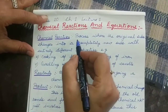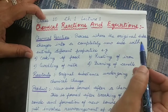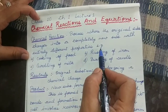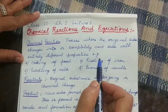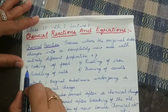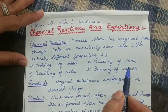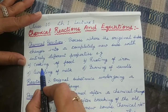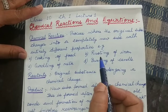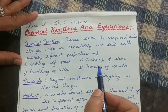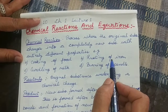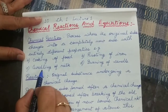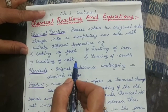What is a chemical reaction? A chemical reaction is a process where the original substance changes into a completely new substance with entirely different properties. Some examples of chemical reactions that you have already studied are cooking of food, rusting of iron, curdling of milk, and burning of candle. For example, when rusting of iron takes place, the grey metal iron gets converted into a reddish brown powder, iron oxide. Similarly, after curdling of milk, the white liquid milk forms a solid or semi-solid curd.